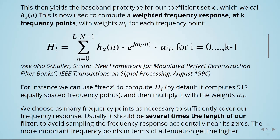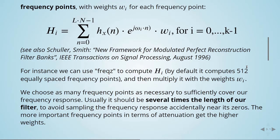For instance, we can use freqz to compute H_i. By default it computes 512 equally spaced frequency points, and then we multiply this H_i with the weights w_i. We choose as many frequency points as necessary to sufficiently cover our frequency response. Usually it should be several times the length of our filter to avoid sampling the frequency response accidentally near its zeros. The more important frequency points in terms of attenuation get higher weights.